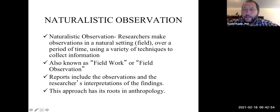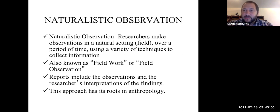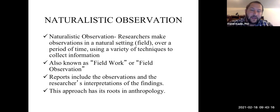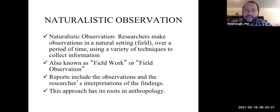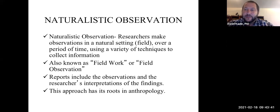So let's talk about naturalistic observation. Naturalistic observation occurs when researchers are observing in a natural setting — not in the lab. You might hear this referred to as fieldwork, happening in the field over a period of time, perhaps six months or a year. A variety of techniques can be used to collect information: direct observation, journaling, photography, film, and interviews. The summary report that comes from naturalistic observation is based on the researchers' interpretations and findings.